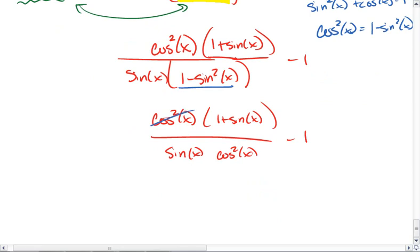My cosine squareds cancel, leaving me with 1 plus sine of x over sine of x, minus 1.